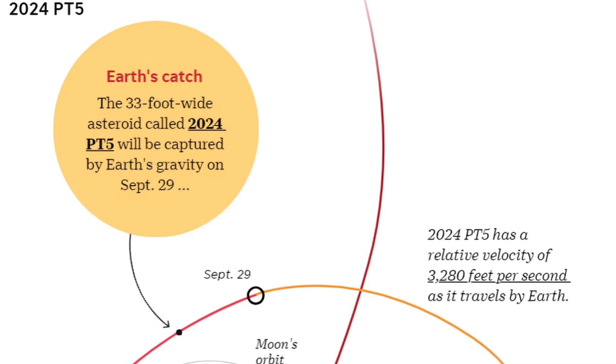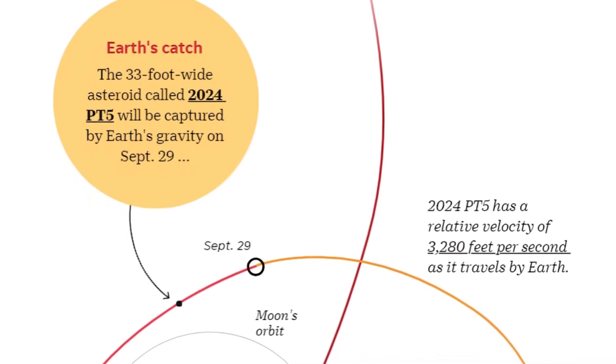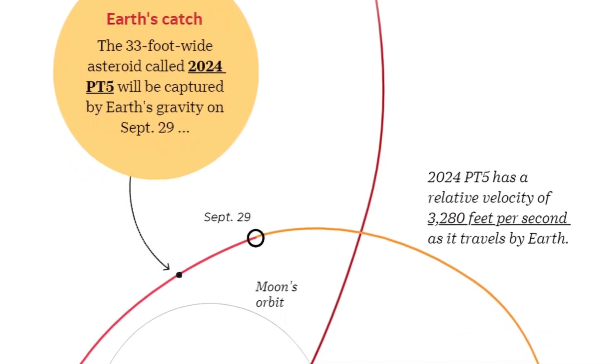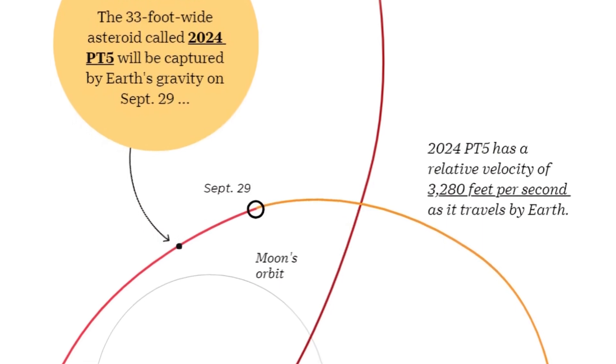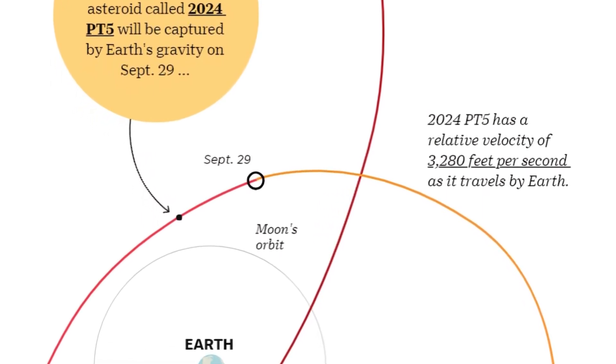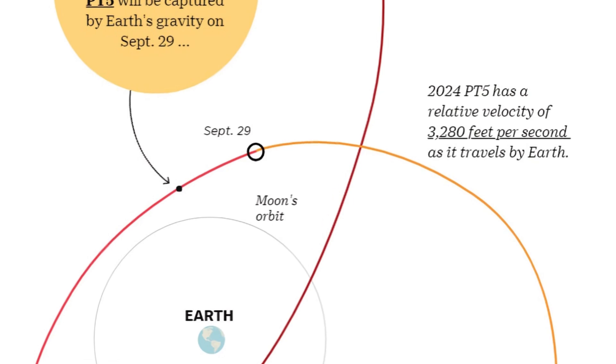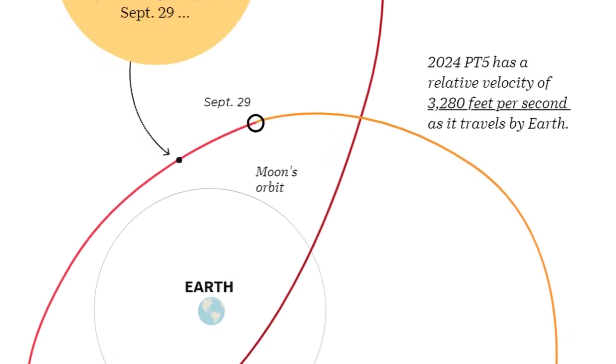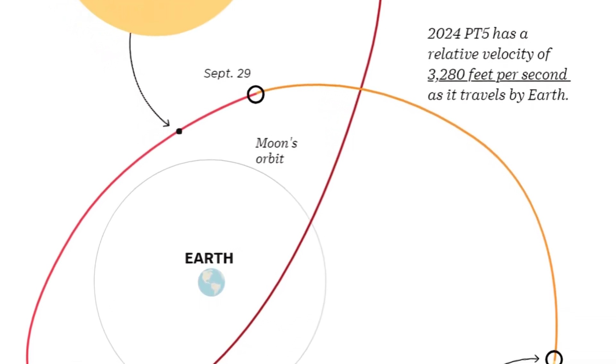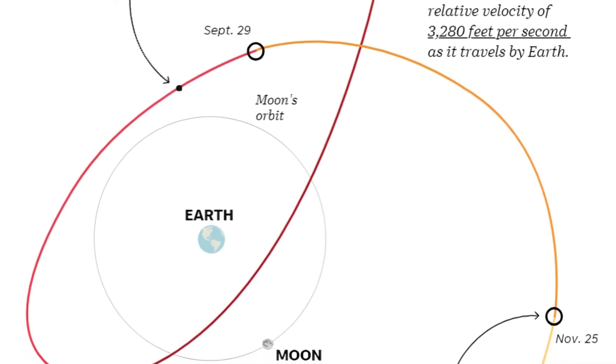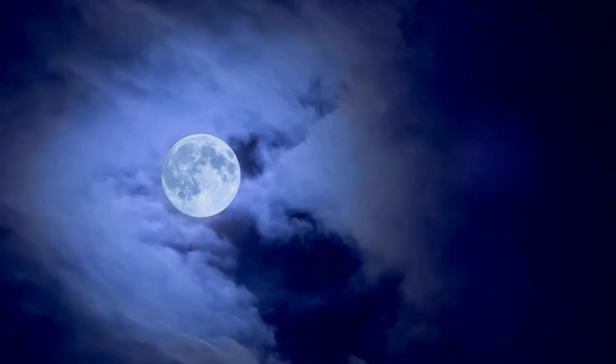For 2024 PT5, forecasts indicate that it will be captured by Earth's gravitational pull on September 29, 2024. After completing a single orbit around our planet, it will resume its original path around the Sun, breaking free from Earth's influence on November 25.